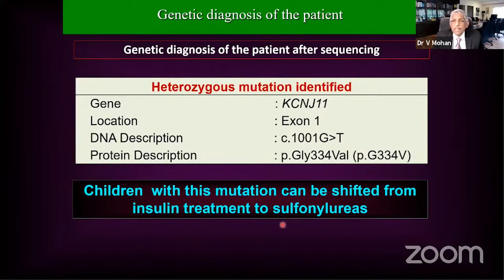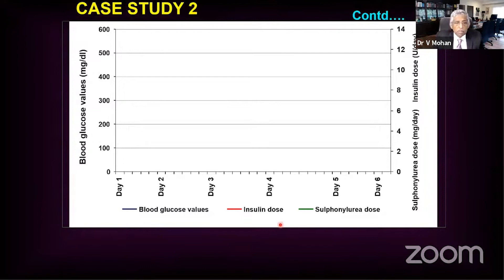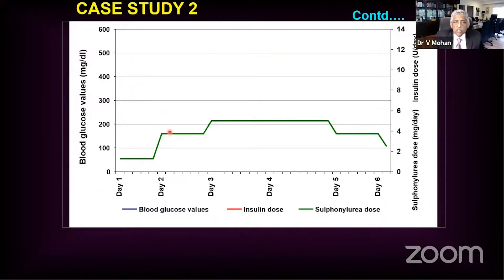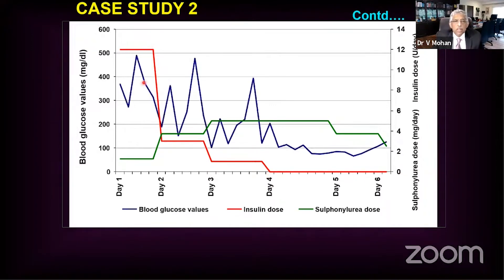With the mutation confirmed, we stopped insulin and started the child on sulfonylurea — glibenclamide. The child was admitted to hospital and the insulin dose was gradually decreased and stopped over five days. The blue line shows blood glucose values, red is insulin dose, and green is sulfonylurea dose. You can see the sulfonylurea dose was slowly stepped up while insulin, which was around 12–14 units, came down to zero by day four. Blood sugars that were not responding around 400–500 started settling beautifully.